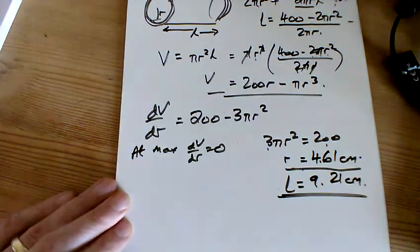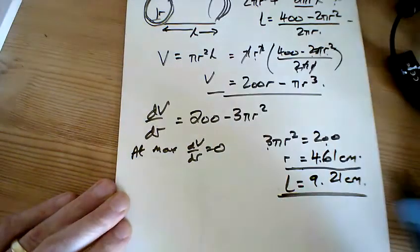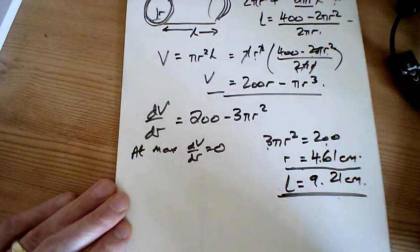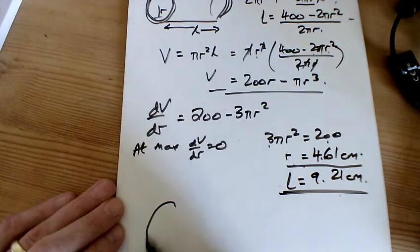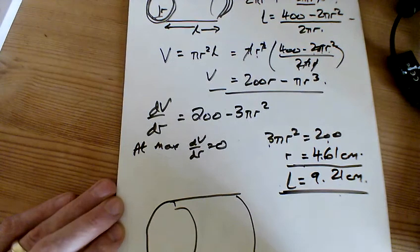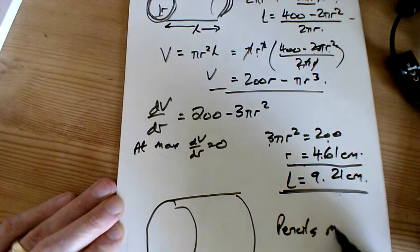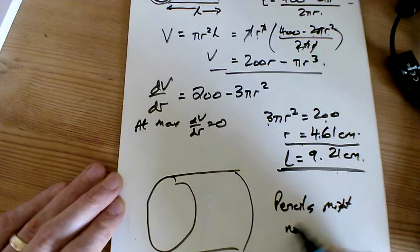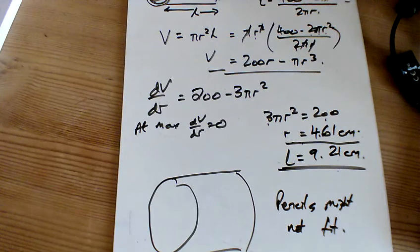That would be the best one. Notice that the diameter then would be... The diameter of this would be the 9.21 as well. And so that's the actual problem, that you end up getting a very fat, thin pencil case. Something like this would be the maximum, and the pencils might not fit. So that's why you wouldn't want a maximum size. I guess. Thank you so much. All right. Thank you.